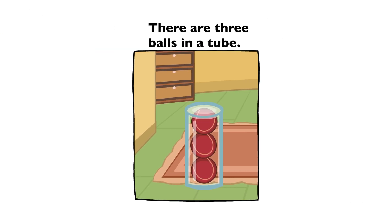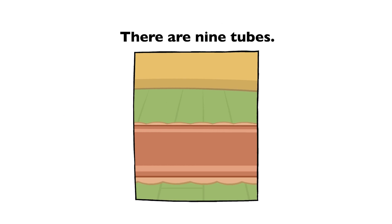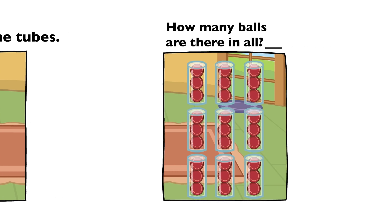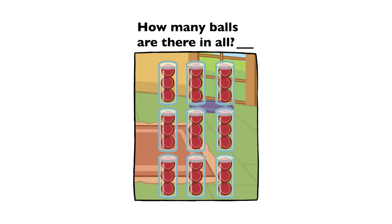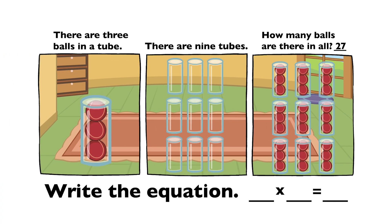There are three balls in a tube. There are nine tubes. How many balls are there in all? Twenty-seven. Three times nine equals twenty-seven.